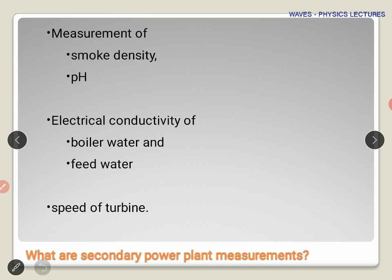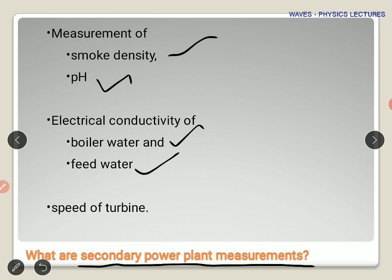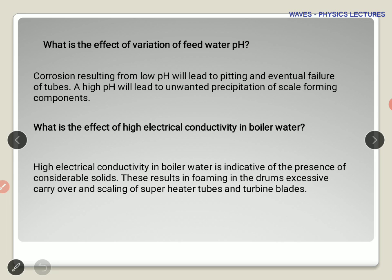Secondary power plant measurements include smoke density, which can check pollution levels and engine efficiency. The pH value of the water flowing through the system also needs to be monitored — it should be more or less neutral, as pH affects electrical conductivity. The electrical conductivity measurement of the boiled water and feed water, and the speed of the turbine, also fall under secondary power plant measurements. These are equally important, just classified separately.